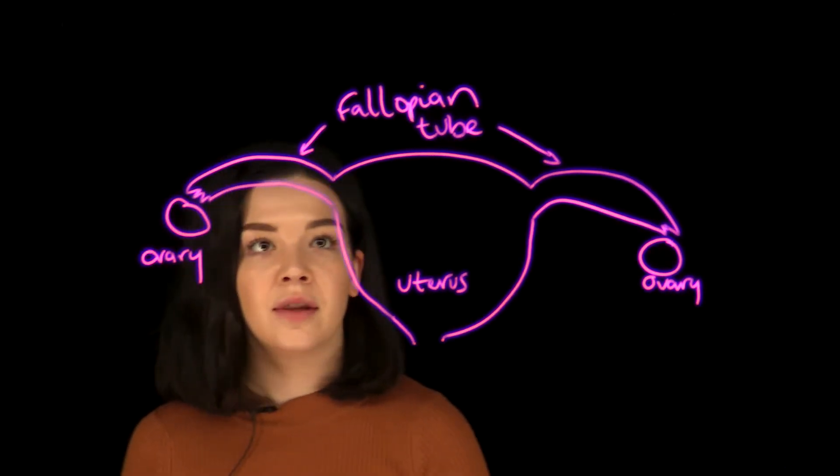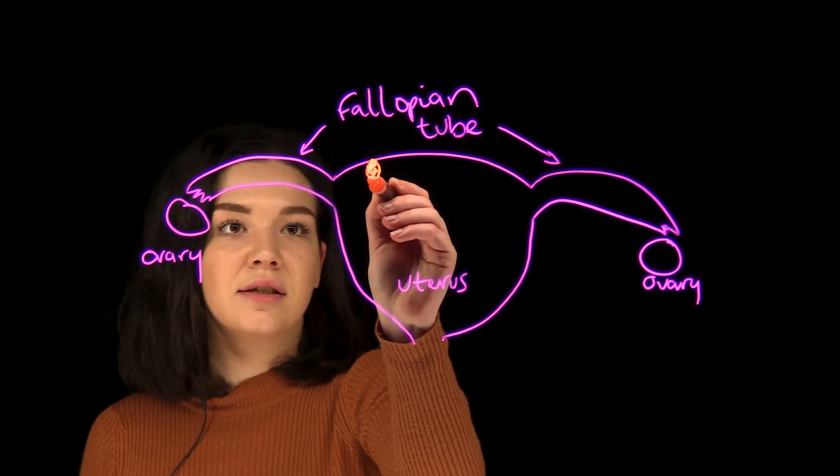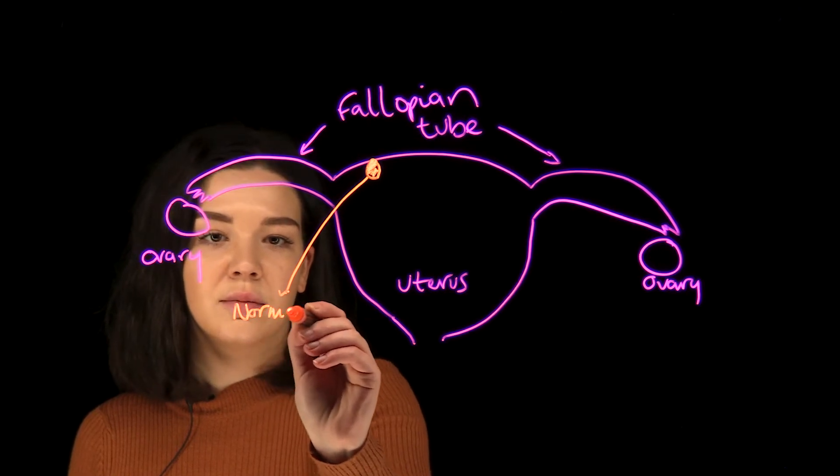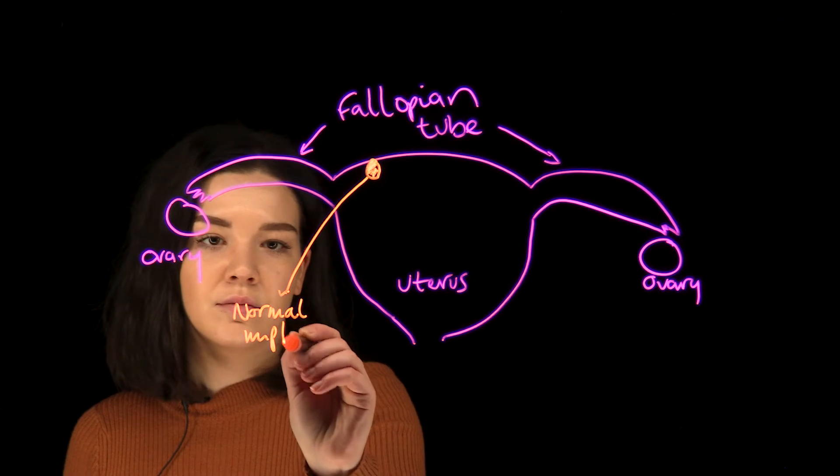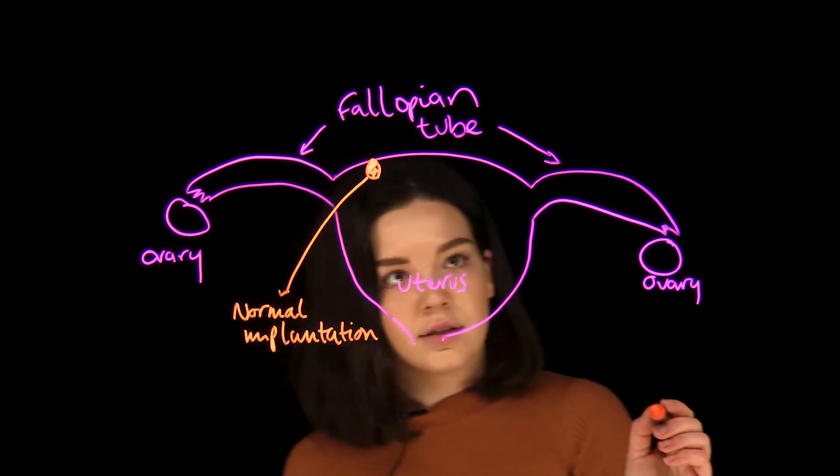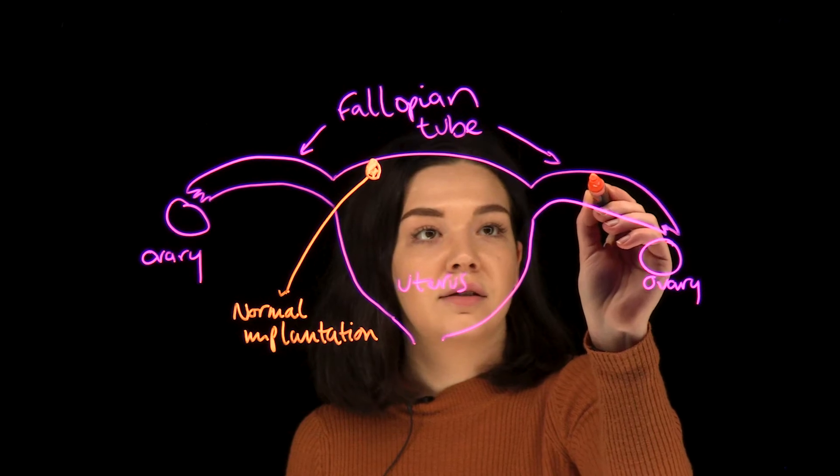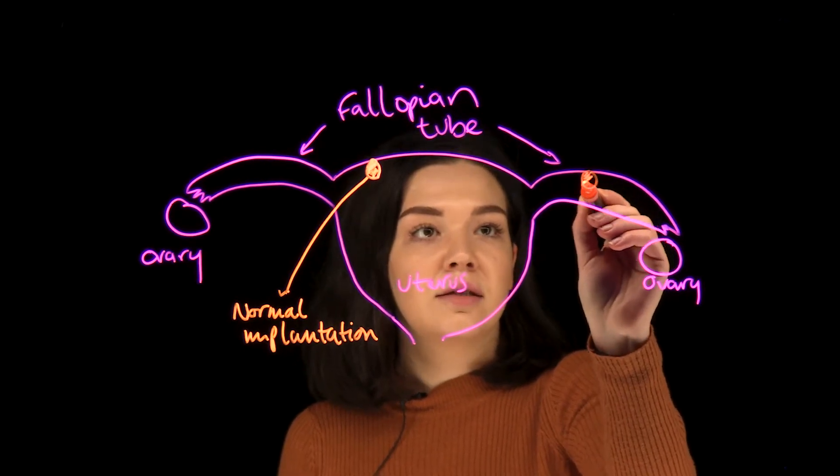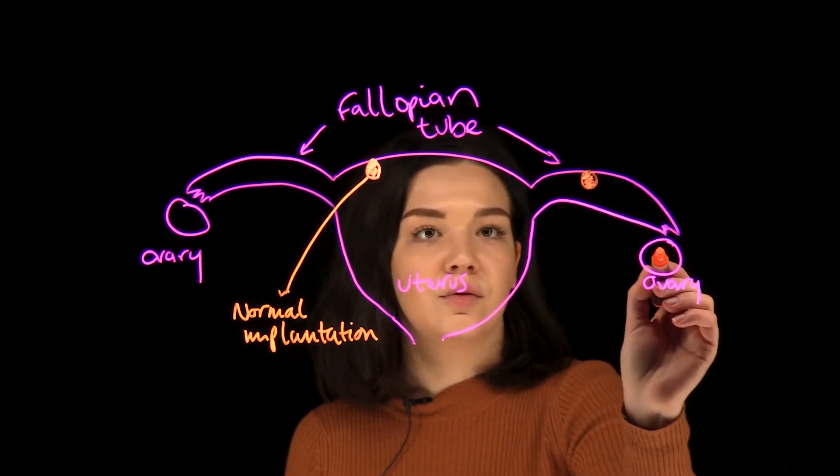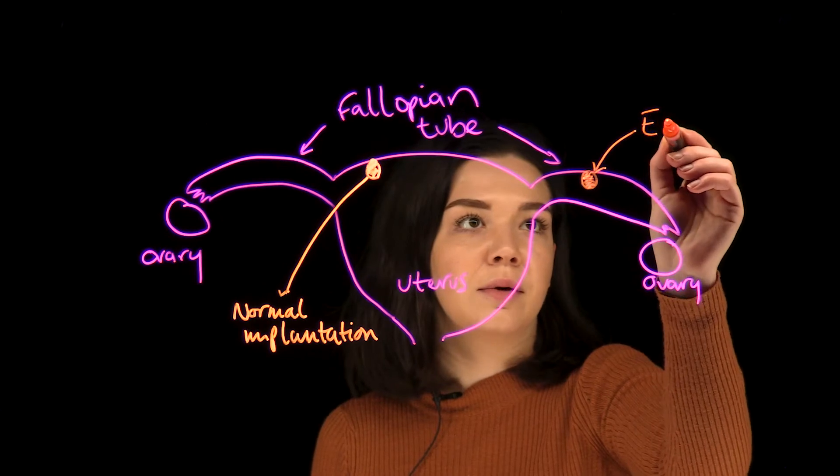Usually an embryo will implant inside the uterus for normal implantation. However, there are occasions when the embryo can implant outside of the uterus, and this most often happens in the fallopian tube, which is the tube that leads from the ovary to the uterus. This is termed a tubal ectopic pregnancy.